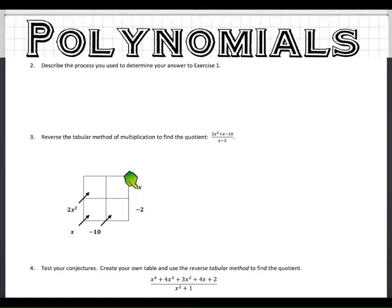So they put x minus 2 right here on the side. That's this on the bottom, right? And you see what they have on top? 2x squared, x minus 10. They put those on the side because that's the answer, right? Because we're going backwards.